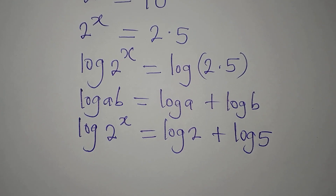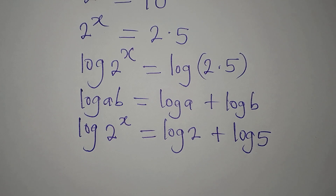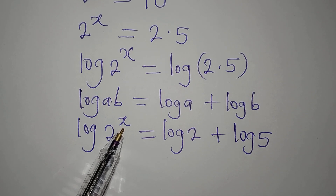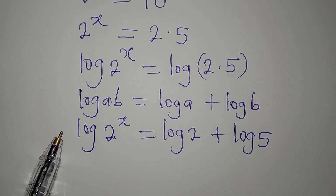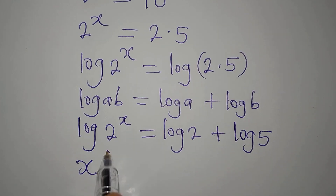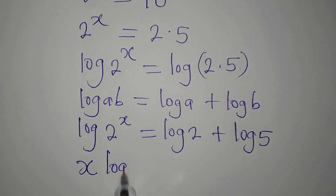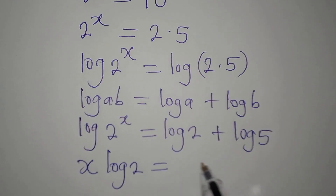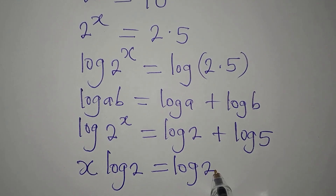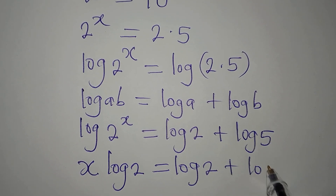The next thing is to bring down the power, because we can always bring the power down to multiply the log. So we are going to have x·log2 equal to log2 plus log5.